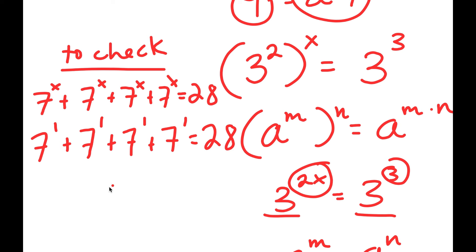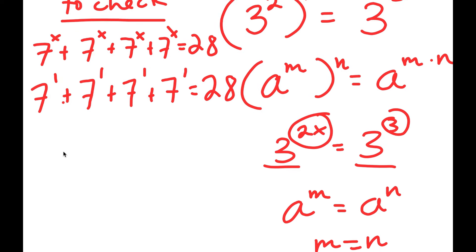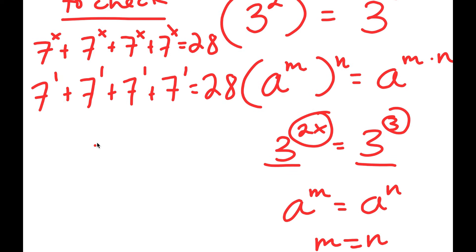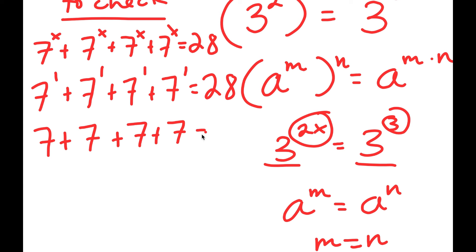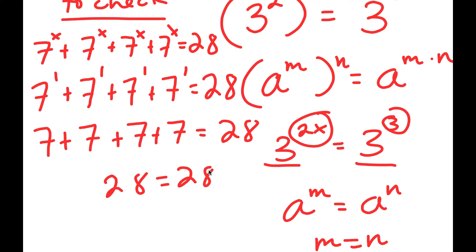Now from here, 7 to the power of 1 is the same thing as 7. So I get 7 plus 7 plus 7 plus 7 is equal to 28. This is the same thing as 28, so I get 28 equals 28, and this is correct.